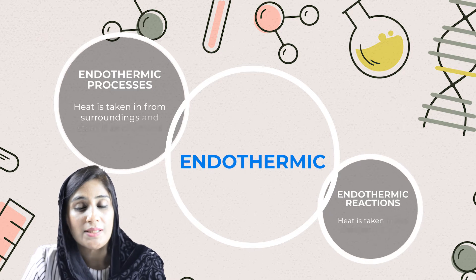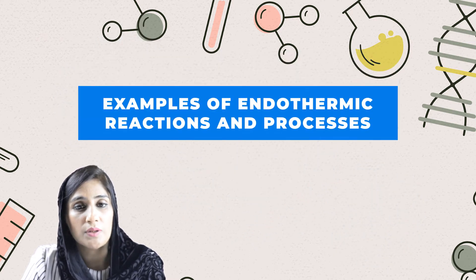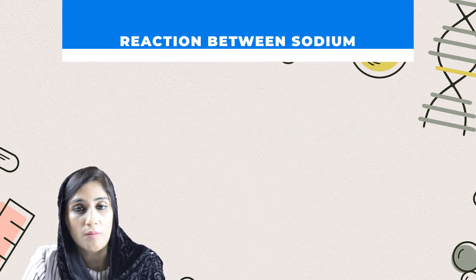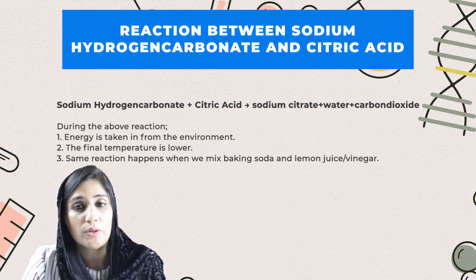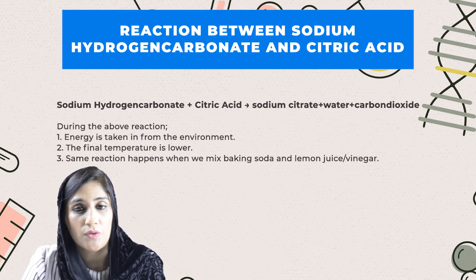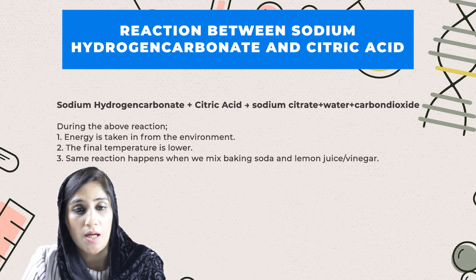Now let's discuss the examples of both. The very first example is sodium hydrogen carbonate and citric acid — this is an example of an endothermic reaction. When sodium hydrogen carbonate is reacted with citric acid, heat energy is taken in from the surroundings. The word equation of this reaction is shown on the screen. The final temperature as a result of this reaction drops down.